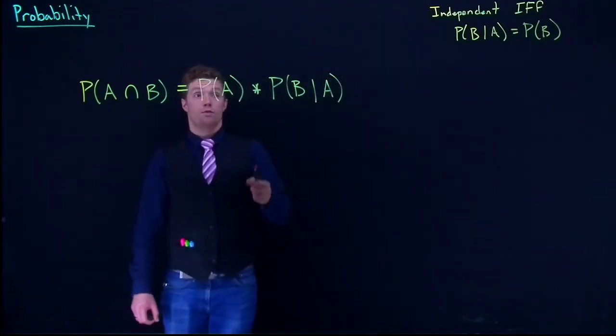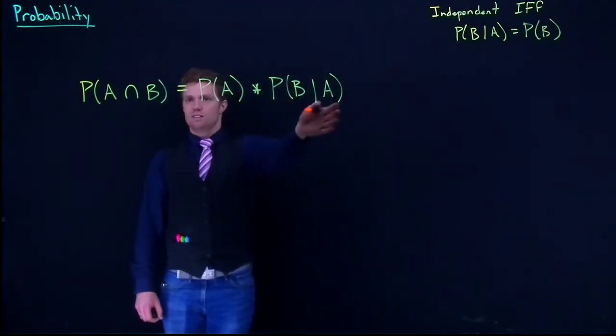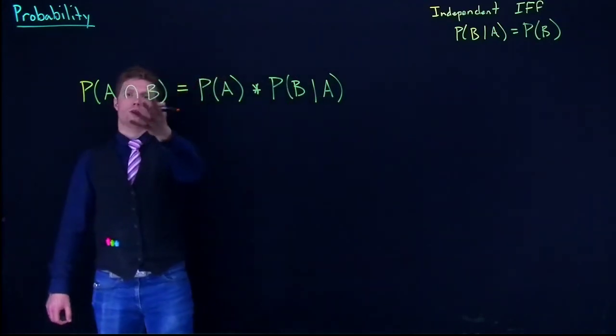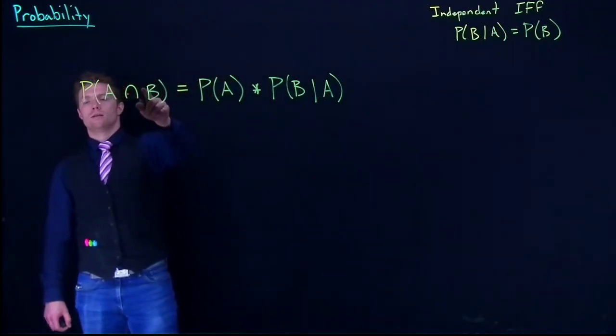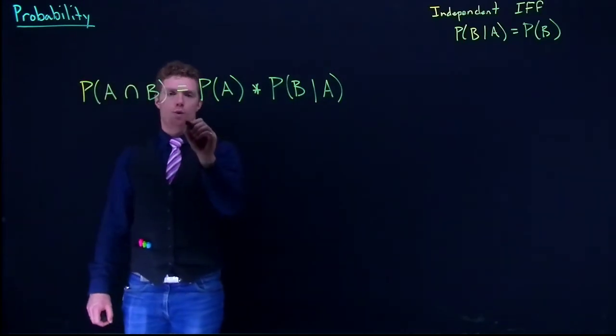So if we have a dependent event, this will work and this will give us our intersection. Let me show you why.